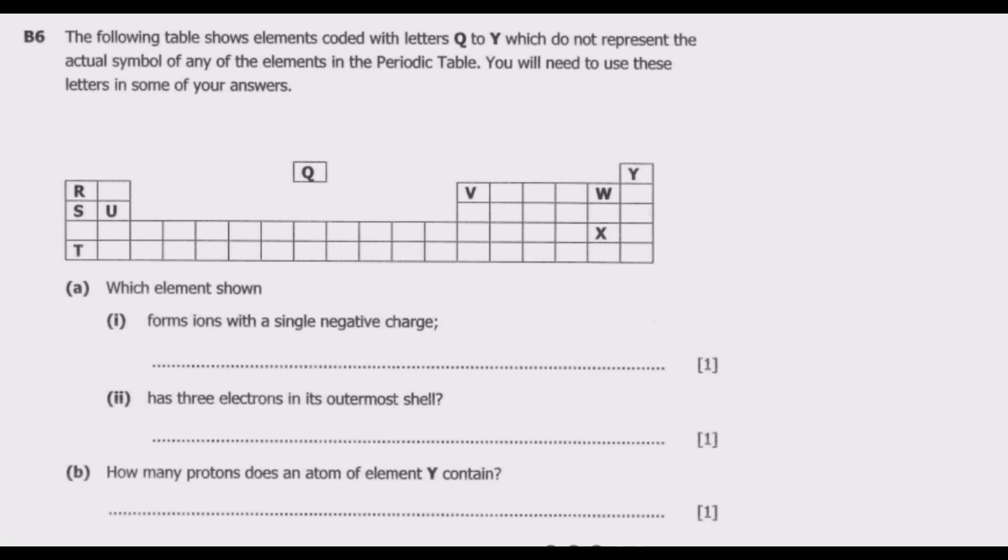Y is an inert gas, which is all elements in group 0. So if you look at W and X, these are the ones in group 7, meaning they are ready to gain an additional electron to have a complete outer shell. So once they gain that extra electron, they have a negative charge.